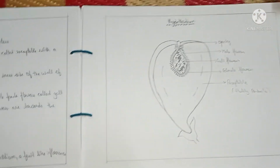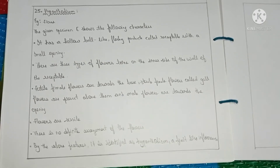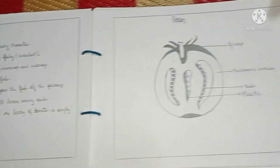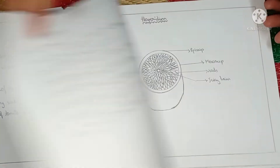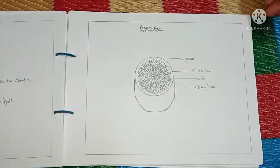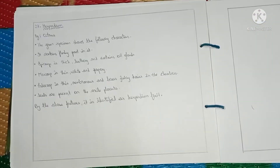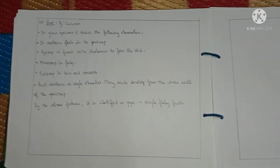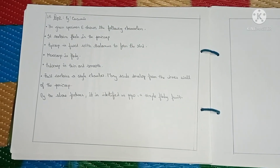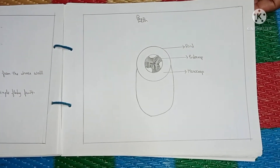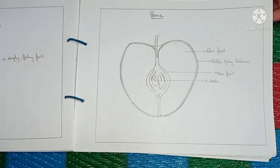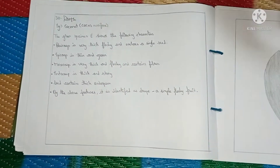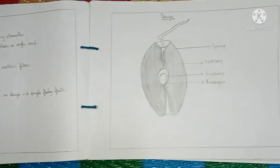Fruit types covered include: diagram and details of hypanthodium, details and diagram of berry with tomato as example, details and diagram of hesperidium with pepper as example, diagram and details of pome with apple as example, and details and diagram of drupe with coconut as example.